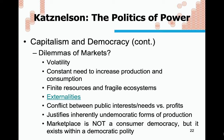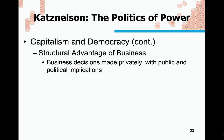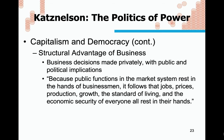Capitalism can justify inherently undemocratic forms of production. The marketplace is not a consumer democracy but it exists within a democratic polity — that's the tension between capitalism and democracy, a running theme in the Katznelson text. There are structural advantages for businesses in the system we have: business decisions are made privately but have public and political implications. As Katznelson puts it, since public functions in the market system rest in the hands of businessmen, jobs, prices, production, growth, the standard of living, and economic security all rest in their hands.